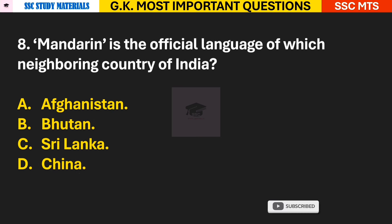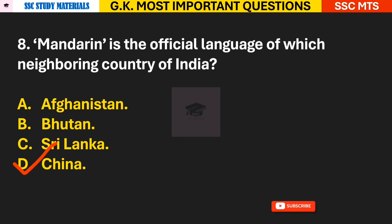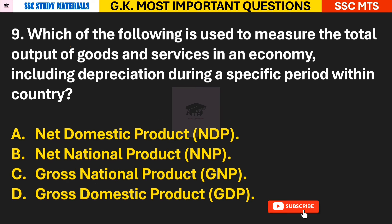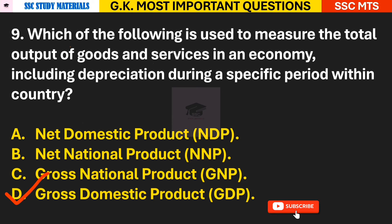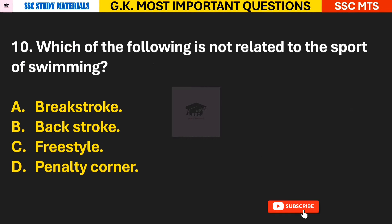Question 8: Mandarin is the official language of which neighboring country of India? Answer D — Mandarin is the official language of China. Question 9: Which of the following is used to measure the total output of goods and services in an economy, including depreciation, during a specific period within a country? Answer D — Gross Domestic Product (GDP).